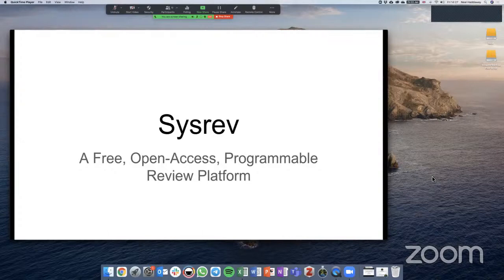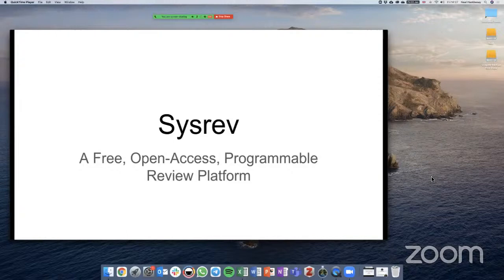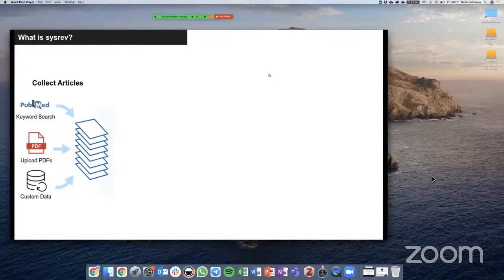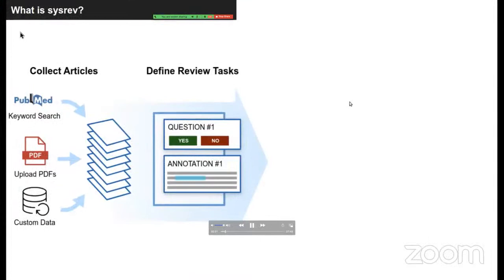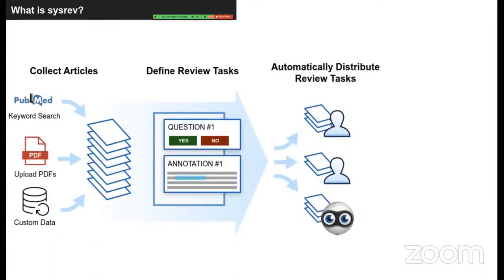Hi, I'm Tom Luchtefeld, and I'm going to talk about sysrev.com, a free open access programmable review platform. Sysrev can be really helpful for putting together systematic reviews or for extracting data from documents. Sysrevs are projects where you upload articles or any kind of digital document — from PubMed searches, PDFs, or custom formats. You then define review tasks, which are questions for reviewers: things like whether an article should be included, or extracting answers such as what species was studied or what were the outcomes. Sysrev distributes those tasks to reviewers you invite and starts to automate them using a built-in machine learning platform that learns from reviewer labels.